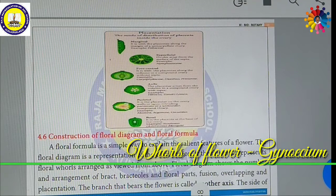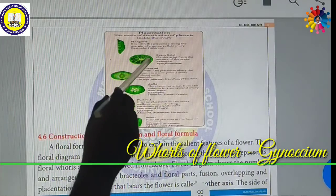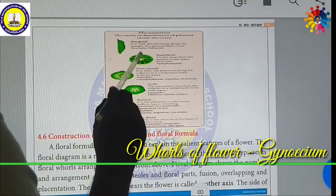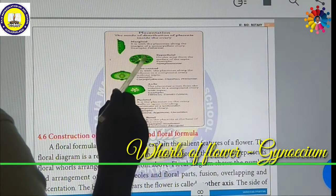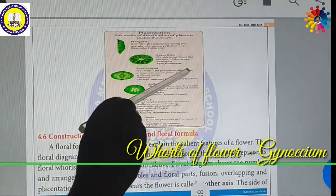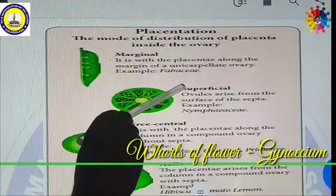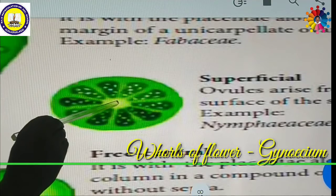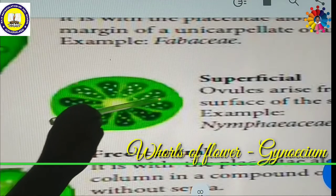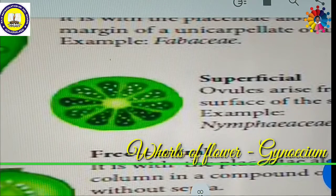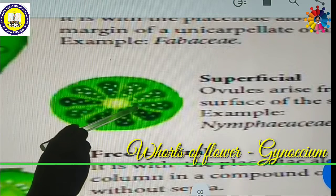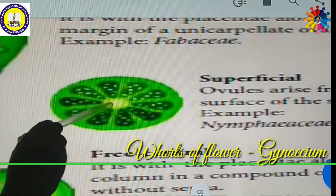Superficial placentation: inside the ovary, there are various locules. The ovary has an axis in the middle and septa — the middle walls. The ovules are attached on the wall of the septum, arising from the surface of the septum. This is called superficial placentation.